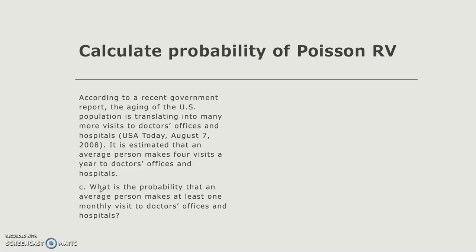And the last question is: what is the probability that an average person makes at least one monthly visit to a doctor's office? So if we make it into a symbol, the probability that at least one visit should be symbolized as x greater than or equal to 1. So it's P(x=1) plus P(x=2) and so on. Or you can also count it as 1 minus P(x=0) because we know that the probability of no visit from our previous work was 0.717.